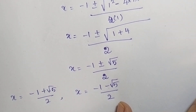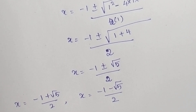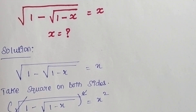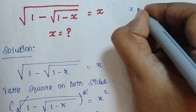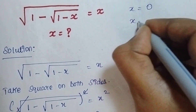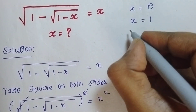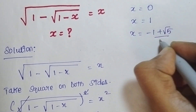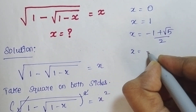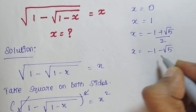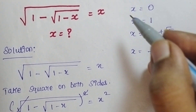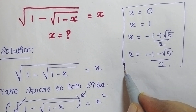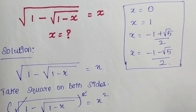So from this I can find all the values of x. x = 0, x = 1, x = (-1 + √5)/2, and x = (-1 - √5)/2. This is the answer for this question. Practice again and again and you will get a perfect answer. Have a nice day, bye bye.